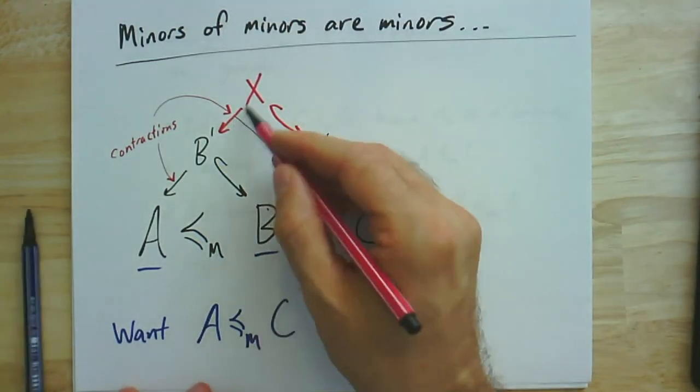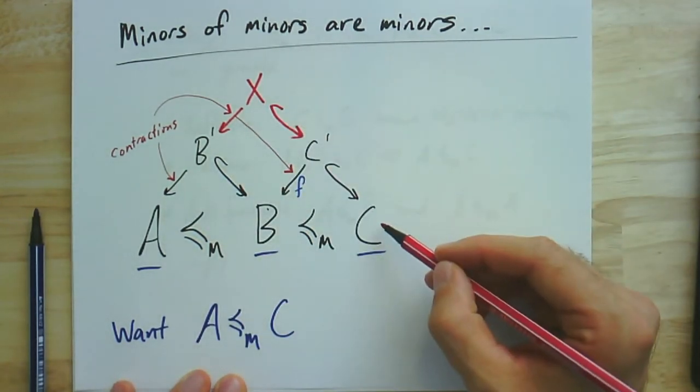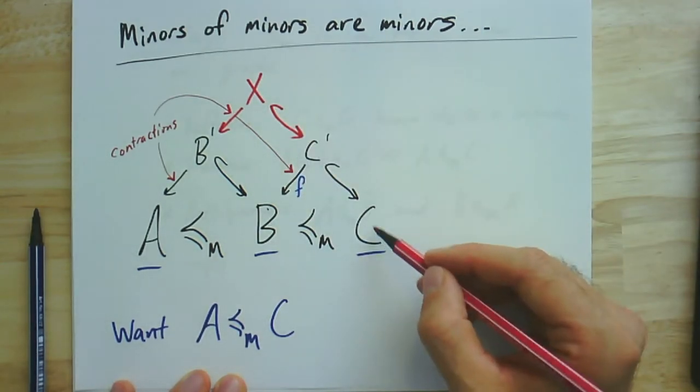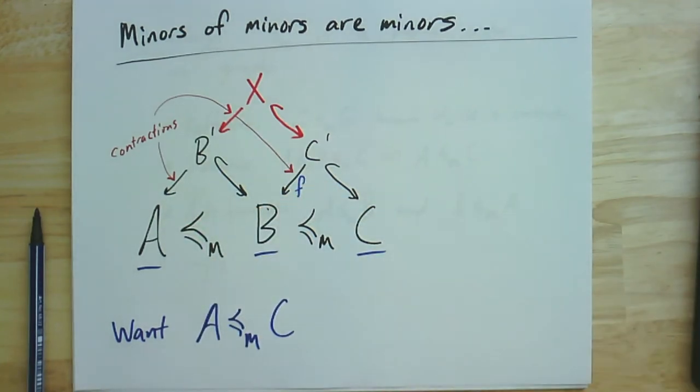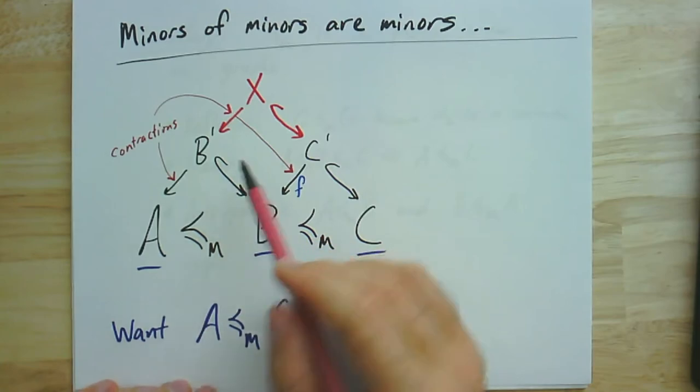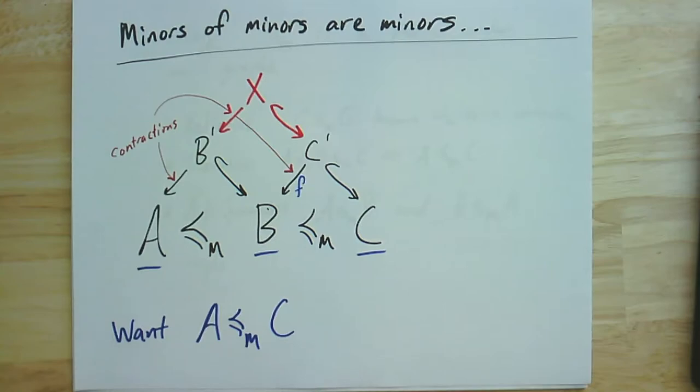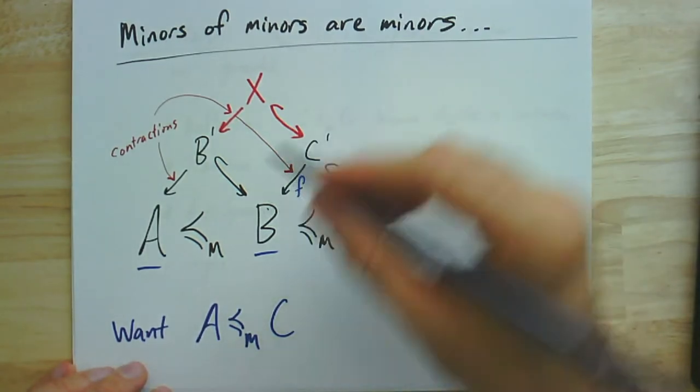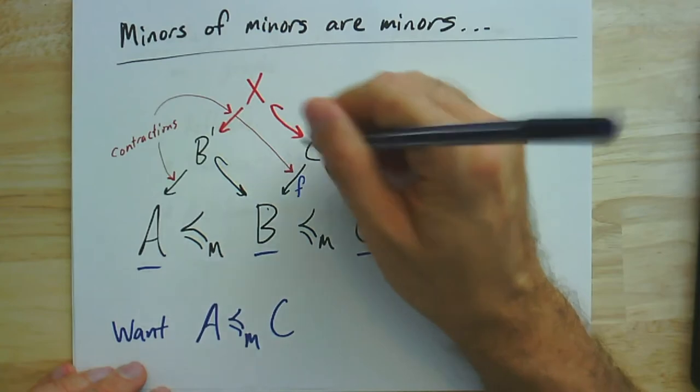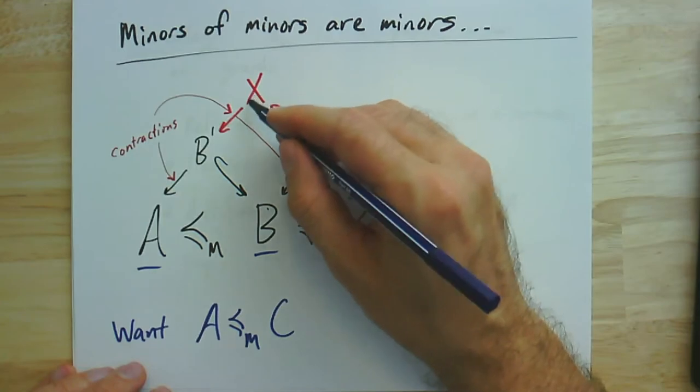And so these will all, these two will be contractions. These two are injections. So this is a subgraph. X will be a subgraph of C. And it will contract and be the composition of these two contractions to get to A. And another way of thinking about this is showing that actually B prime is a minor of C prime. And the way we'll do it, the construction is relatively straightforward. I think if you were to puzzle this out, you might spend quite a bit of time trying to figure out what exactly you were supposed to keep from C in order to be able to have this contraction.